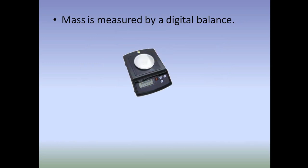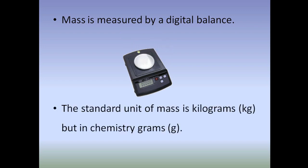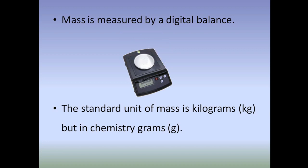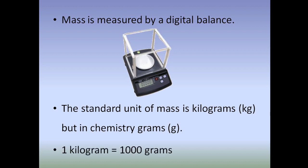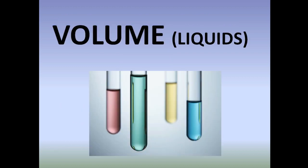Next: mass. Mass is measured by a digital beam balance. To avoid interference of air, the balance should be covered. Usually for chemical reactions we use grams as the unit of mass, because with small batch chemical reactions we get products in grams only.